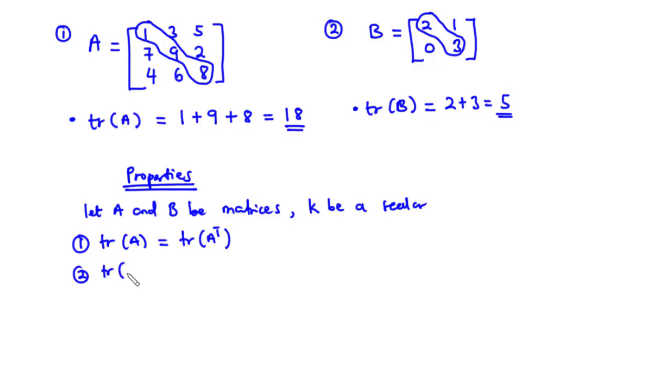Property 2: The trace of matrix A plus B is equal to the trace of matrix A plus the trace of matrix B.